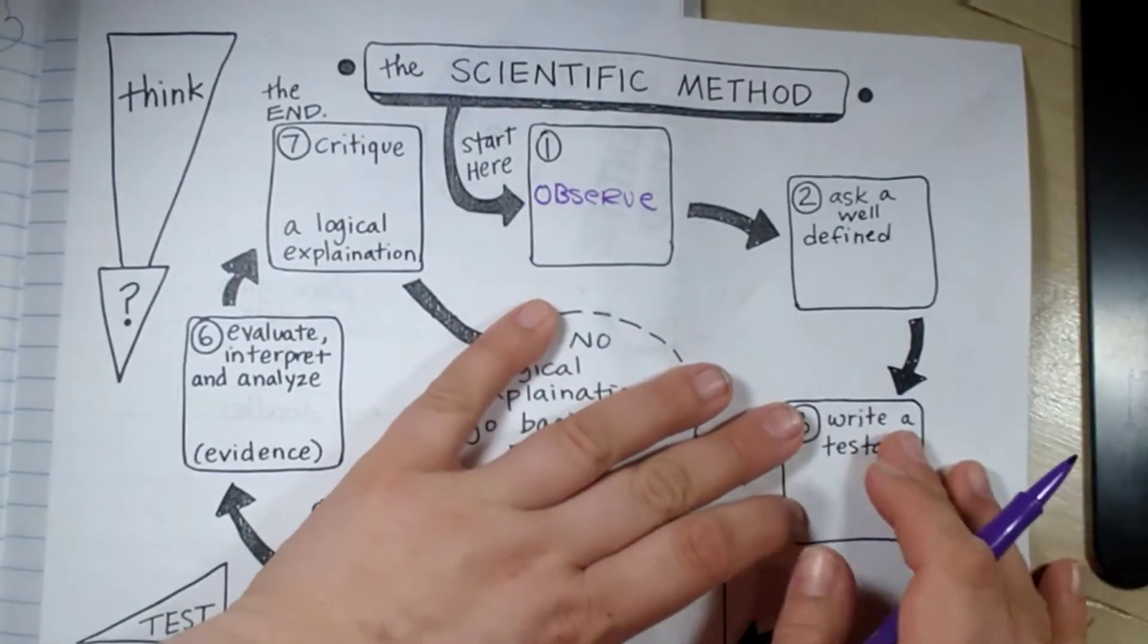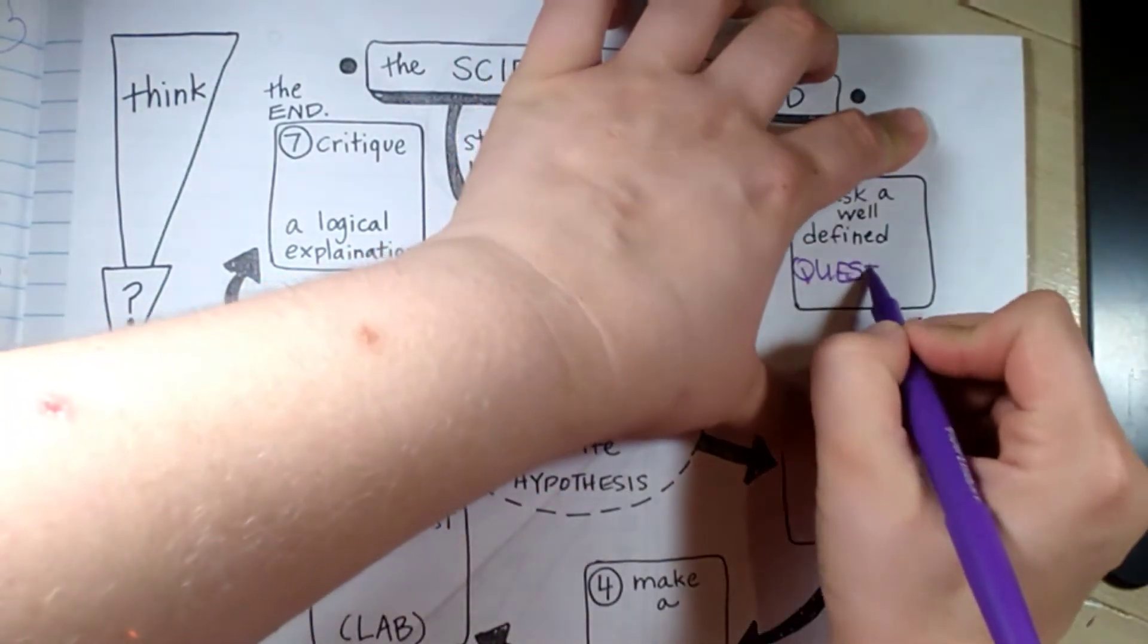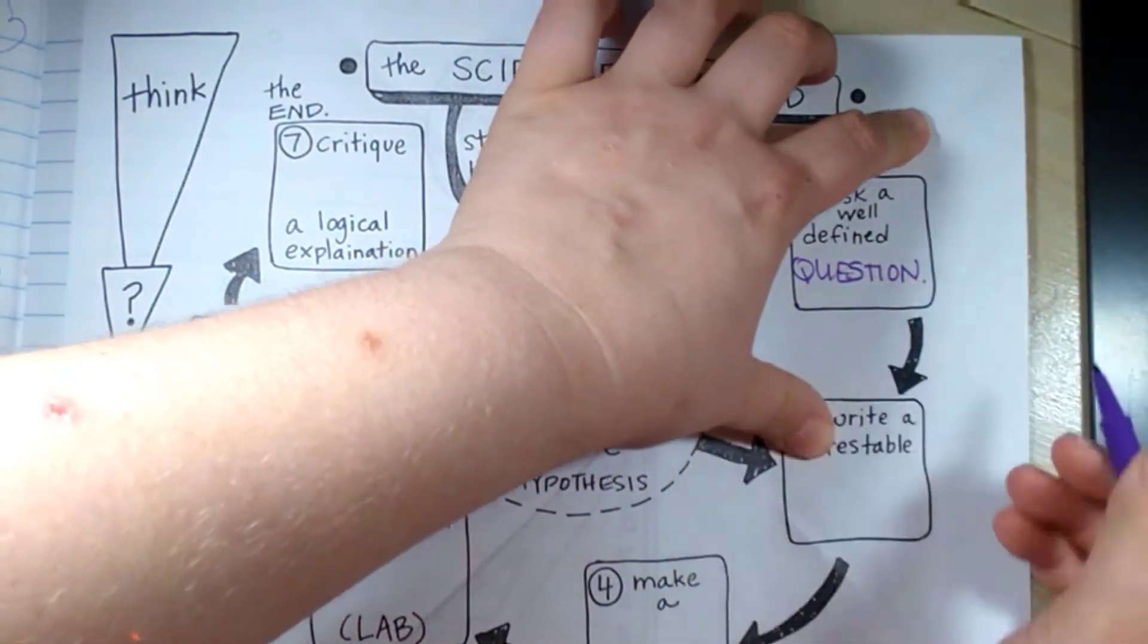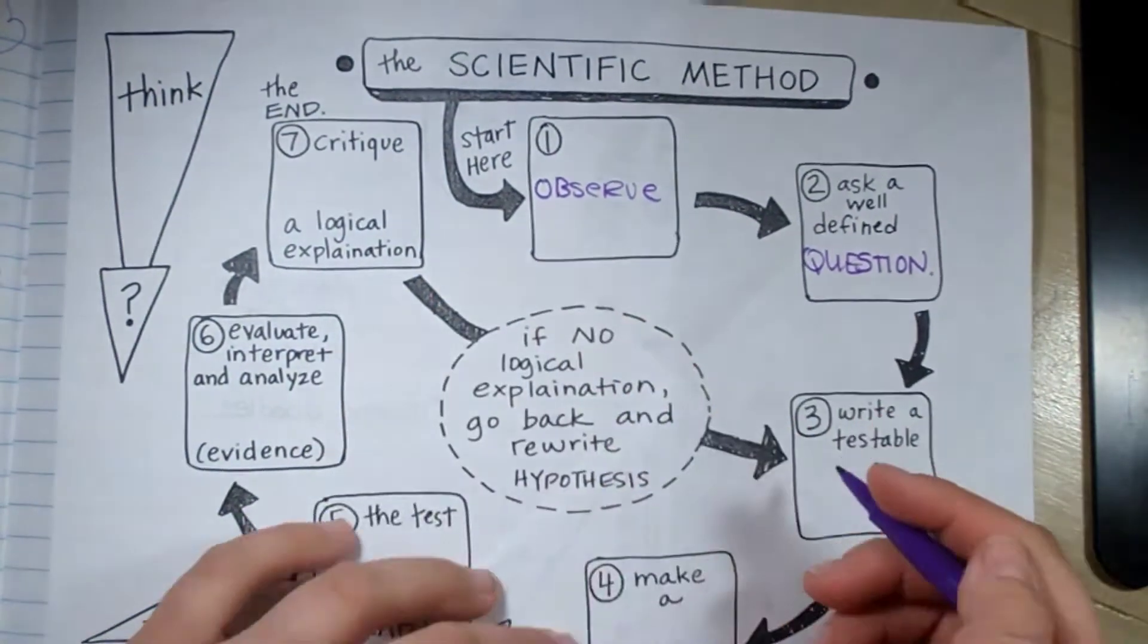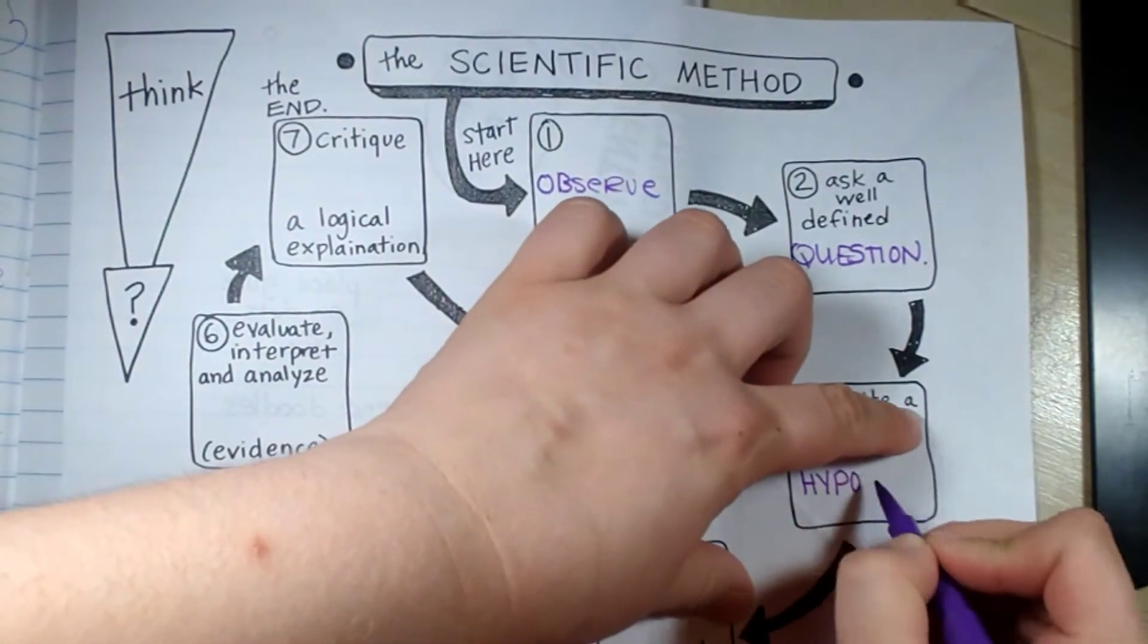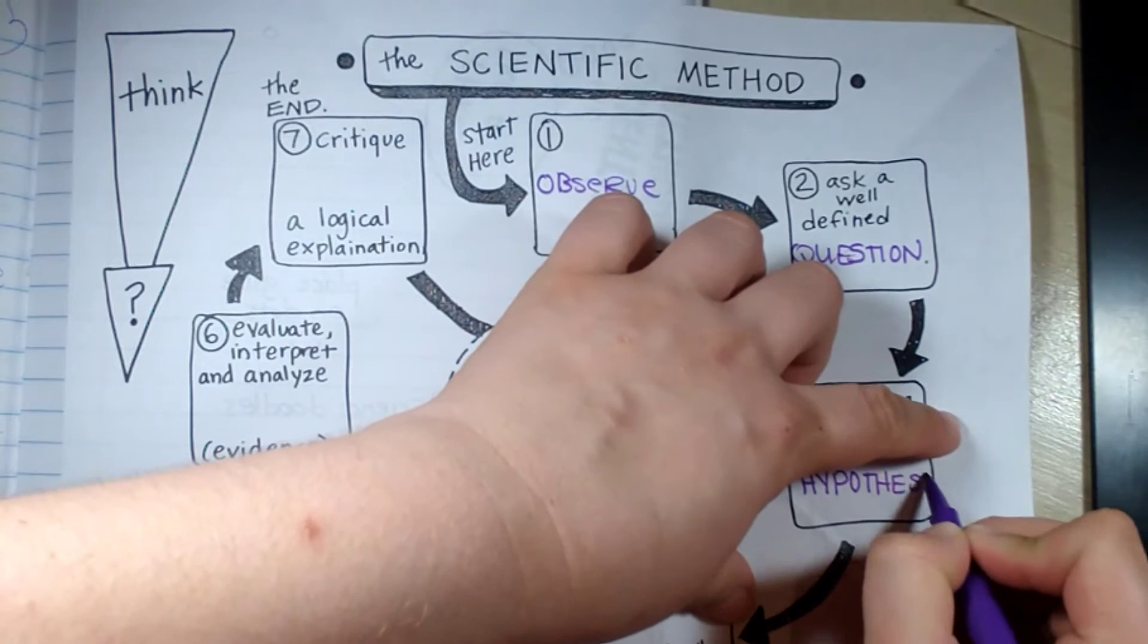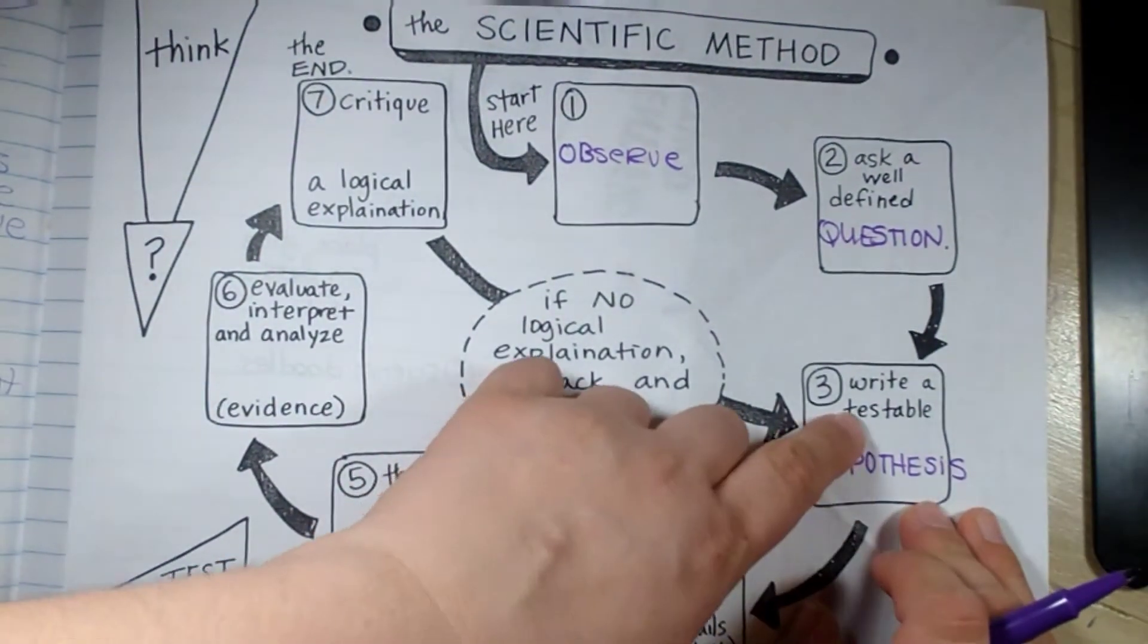Then you're going to ask a well-defined question. Investigations all start with a question about what you observe. Then you're going to write a testable hypothesis. Now remember a hypothesis is a guess. What do you think will happen? Can I test it?